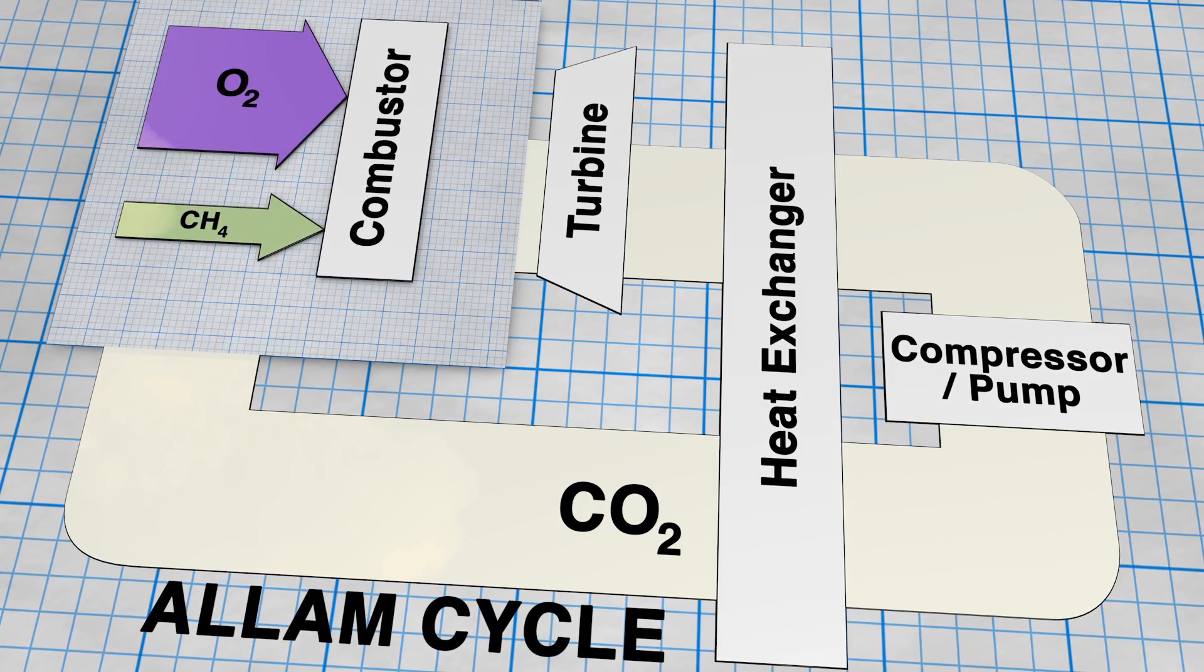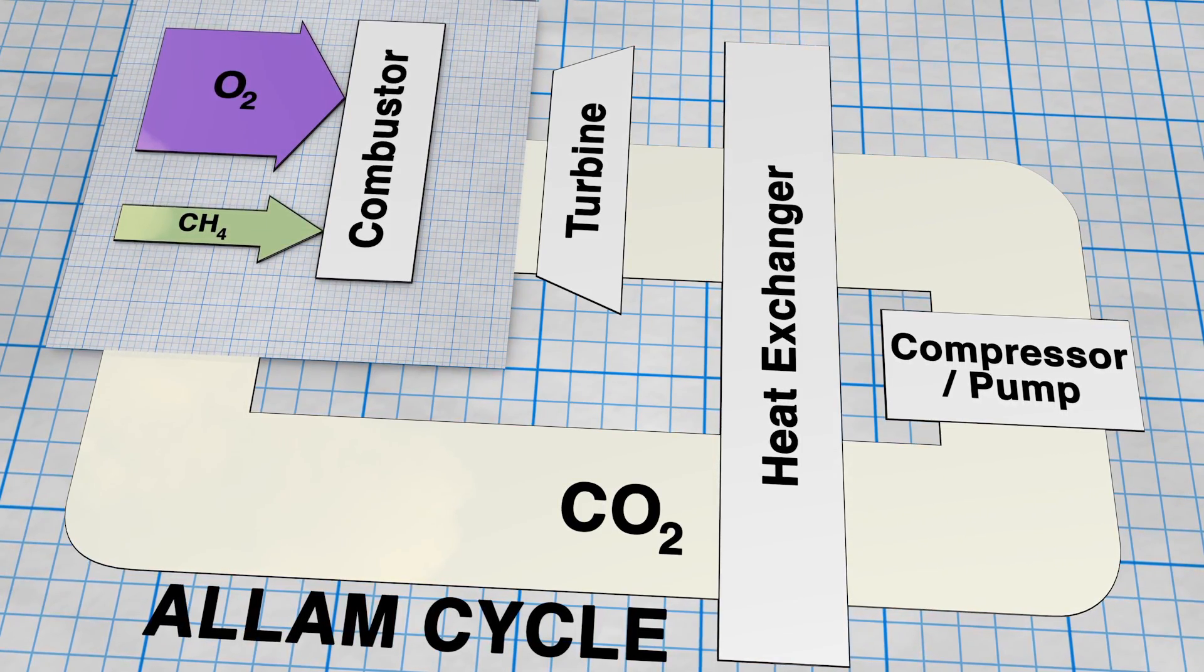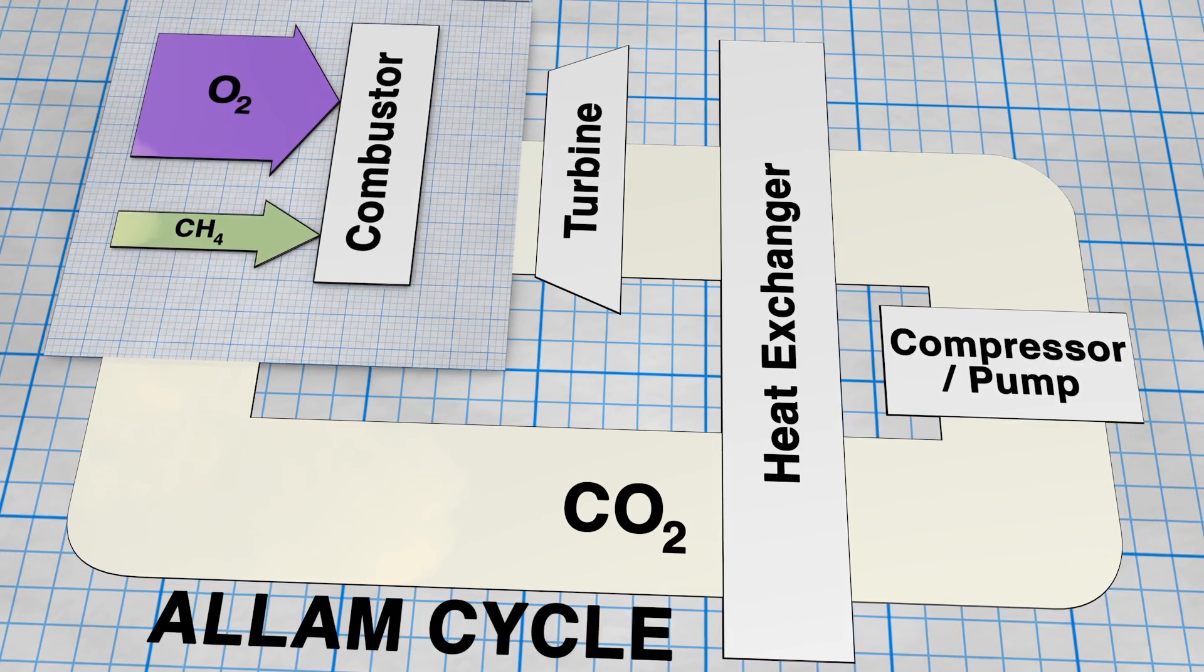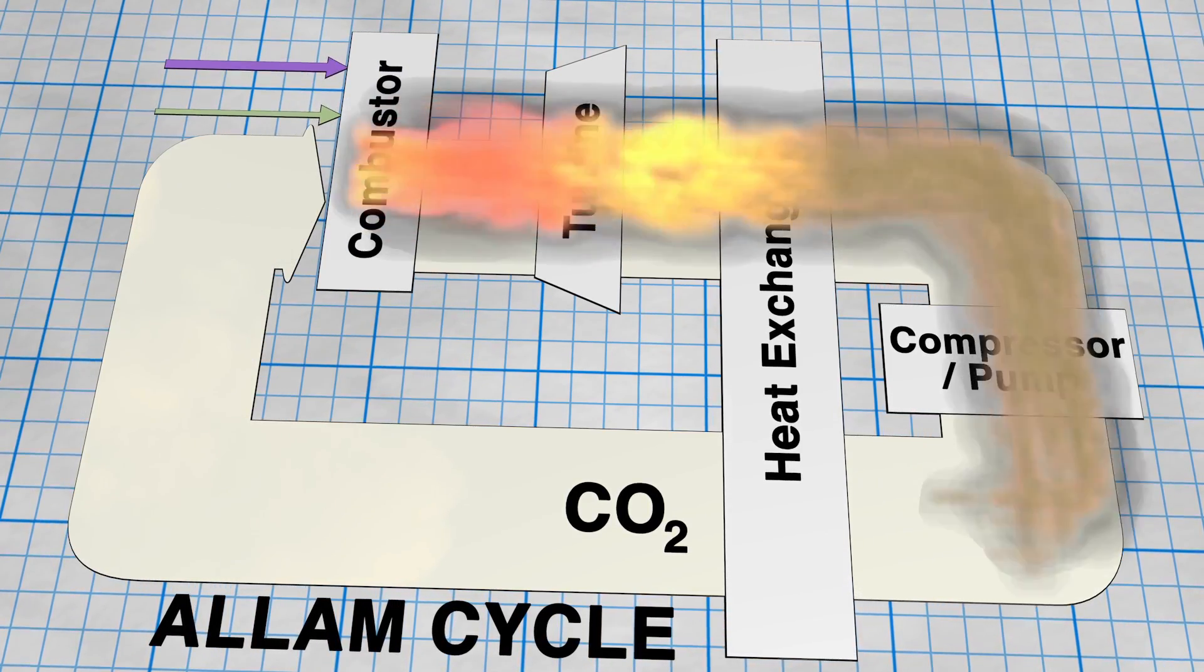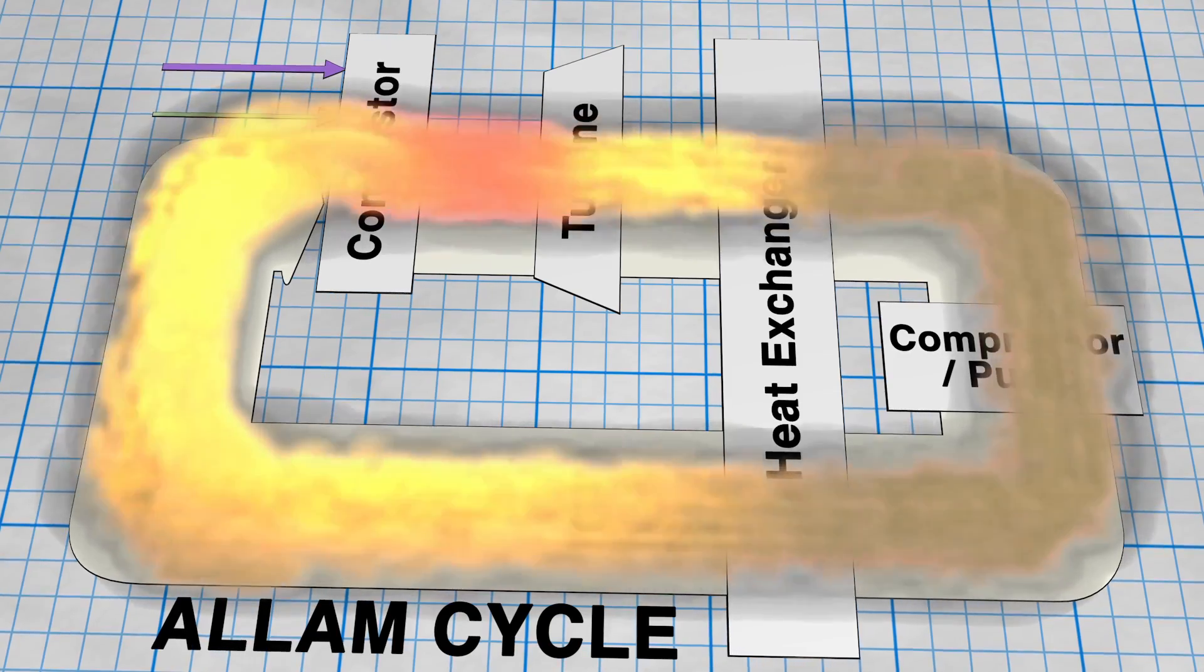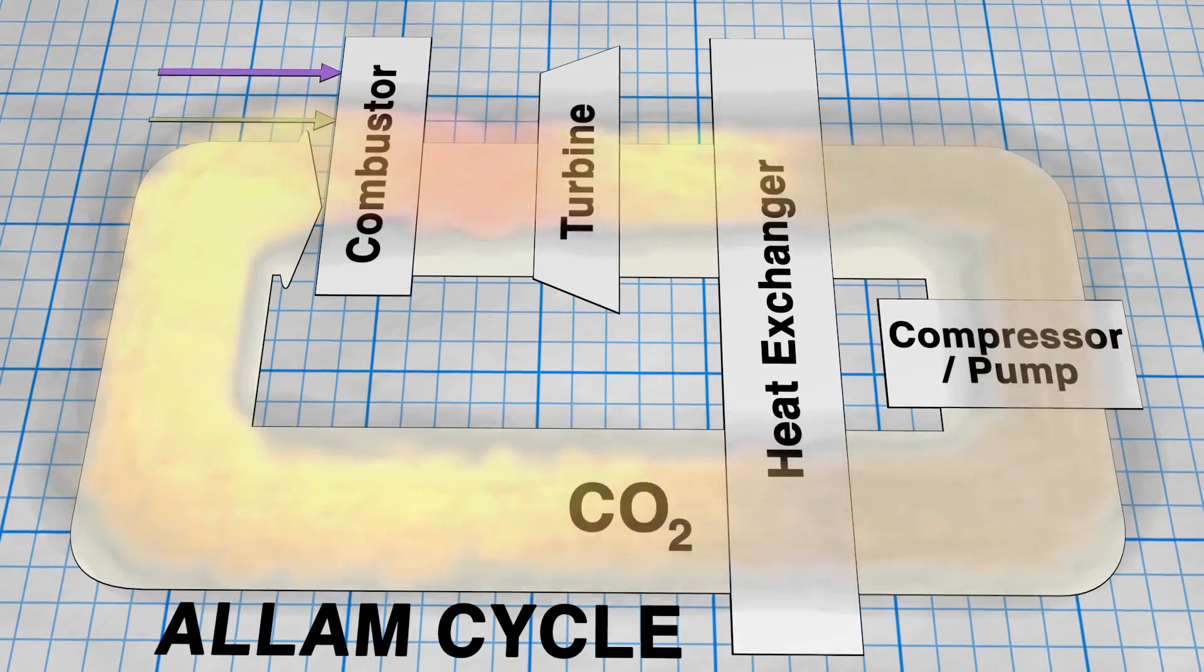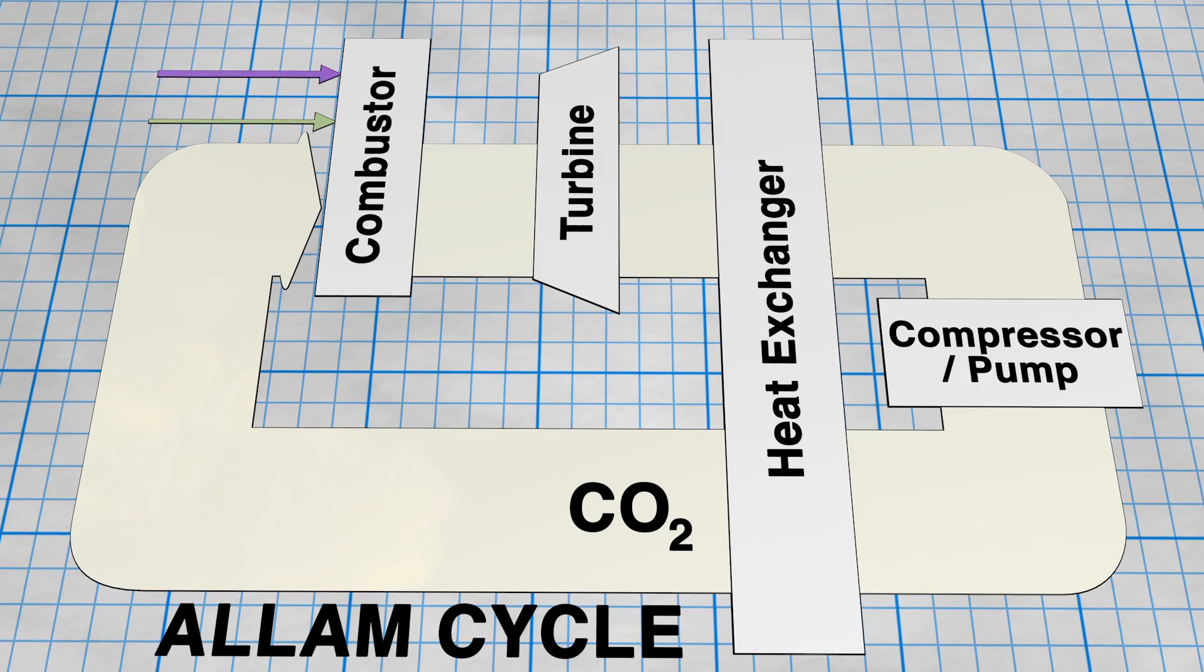Burning with oxygen, known as oxycombustion, is typically uneconomic because oxygen is expensive to produce. NetPower overcomes this problem by recuperating the majority of the produced CO2 into the combustor, dramatically lowering oxygen requirements.